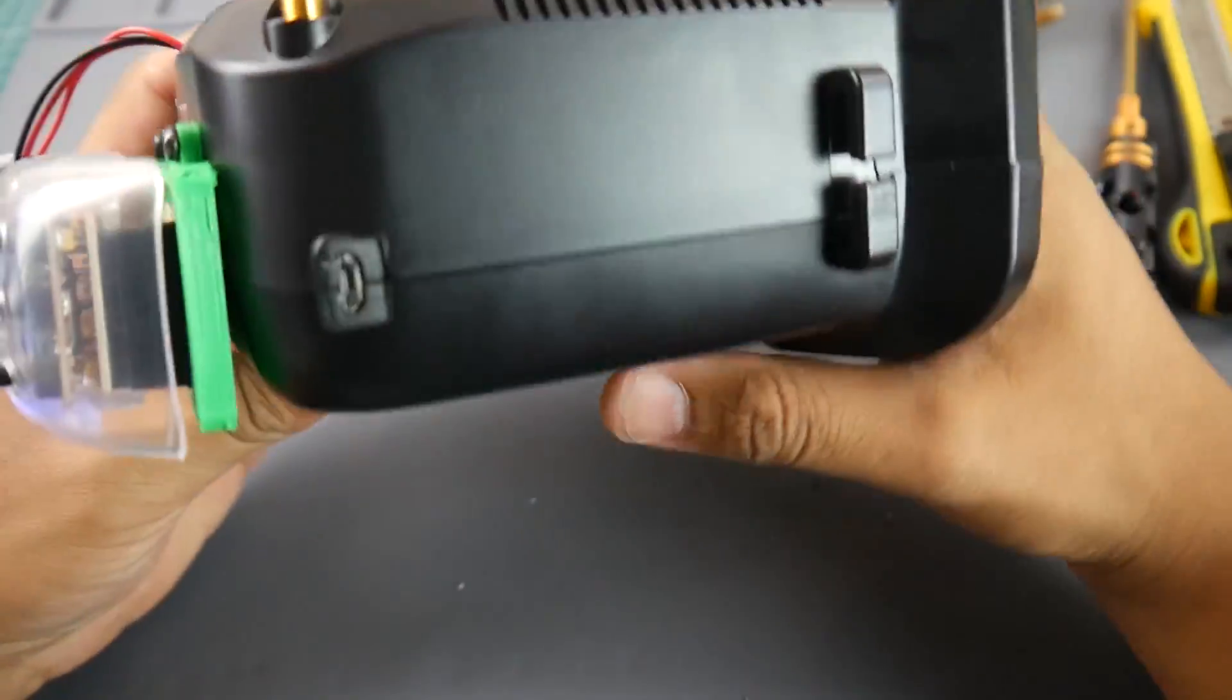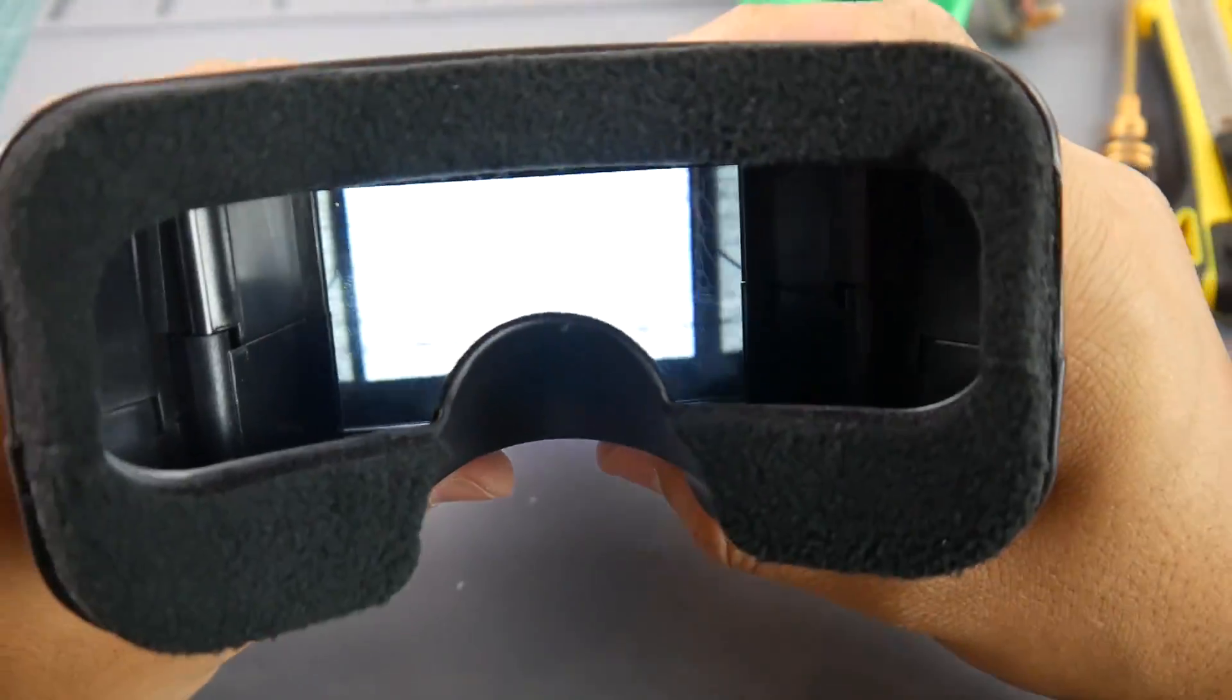All right. So we have the module here and now we have a blank screen. Now, where are we? We are currently in normal mode, antenna mode. So I'm going to go ahead and switch over to the AV input.